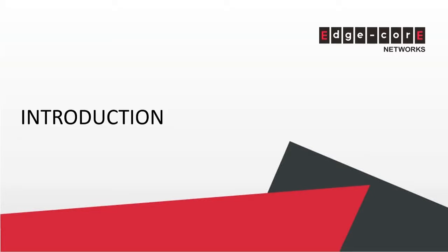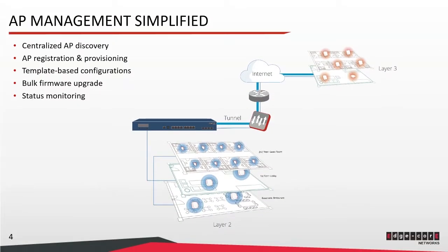So let's start with the introduction. Edgecore simplifies AP management by supporting centralized AP discovery, AP registration and provisioning, template-based configurations, bulk firmware upgrade, and status monitoring. The diagram here shows that our solution provides centralized AP management across both layer 2 and layer 3 networks. When we talk about layer 2 AP management, we're typically referring to management of APs located on the LAN side of the controller. And when we talk about layer 3 AP management, it is typically management of APs located on the WAN side, and the APs may even be behind NAT.